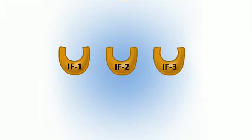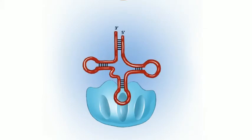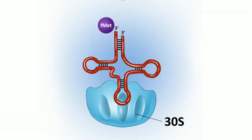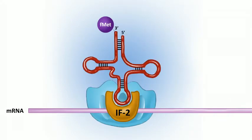Initiation begins with initiation factors, cleverly named IF1, IF2, IF3, and so on. They assist in assembly of the smaller ribosomal subunit — the 30S in prokaryotes — to the first tRNA molecule. The first amino acid in a polypeptide is methionine, so we start with a methionine tRNA. In prokaryotes it's actually formyl-methionine, or f-methionine.